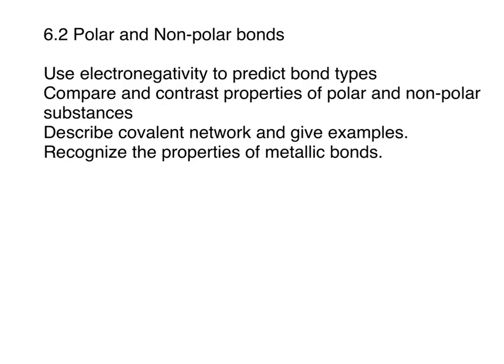The goals for this lesson are to use electronegativity to predict bond types, to compare and contrast properties of polar and non-polar substances, and then to describe two other kinds of bonding: covalent network substances and metallic bonds. So let's get started.